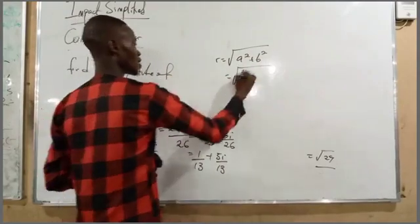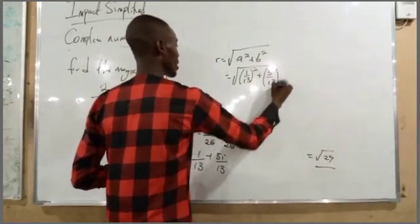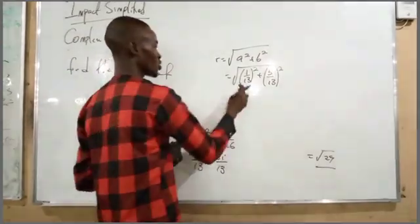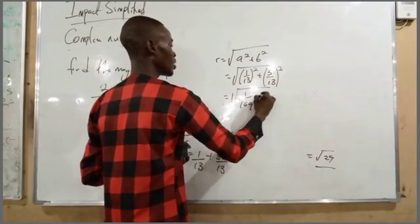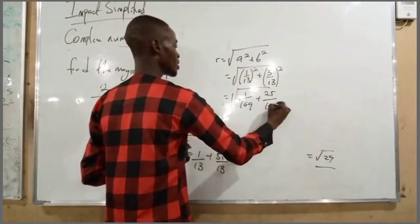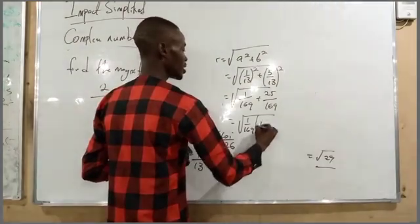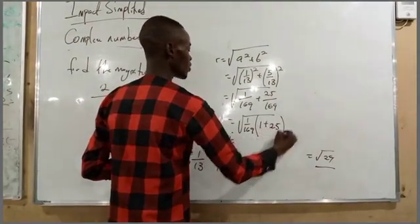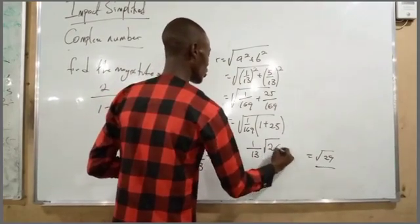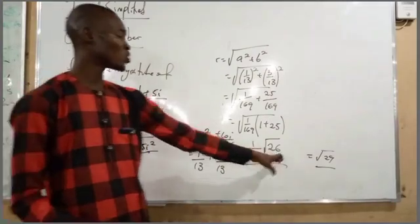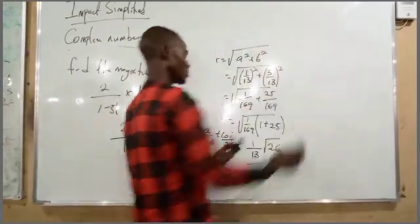With a equals 1 over 13 and b equals 5 over 13: the magnitude is the square root of (1/13)² plus (5/13)². Since 13 squared is 169, this becomes the square root of 1 over 169 plus 25 over 169, which equals the square root of 26 over 169, giving us 1 over 13 times the square root of 26. You can convert this to decimal.